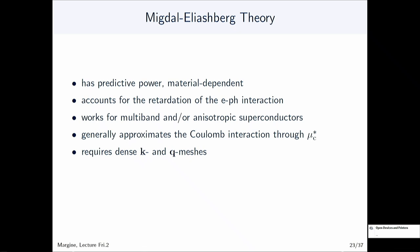To summarize the theory: the Migdal-Eliashberg theory has predictive power — it is materials-dependent. It accounts for the retardation of the electron-phonon interaction through the Migdal approximation. If solved in the anisotropic form, it can be used for anisotropic and multiband superconductors. Generally, it uses an approximate Coulomb interaction via μ*. In principle, the Coulomb interaction V can be calculated inside the Migdal-Eliashberg equation, but this is not currently done. Solving the equations in the anisotropic case requires dense K and Q meshes to reach convergence.